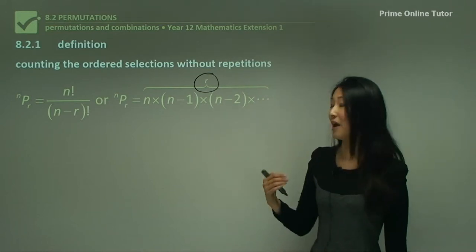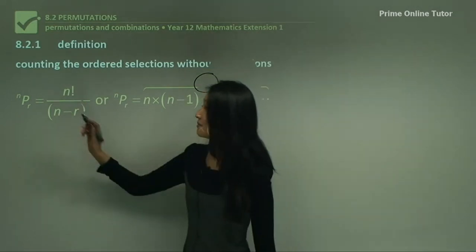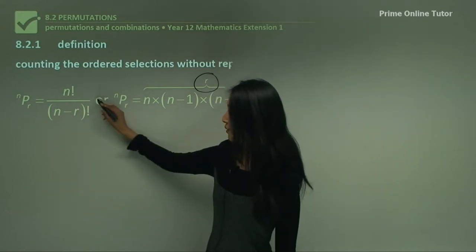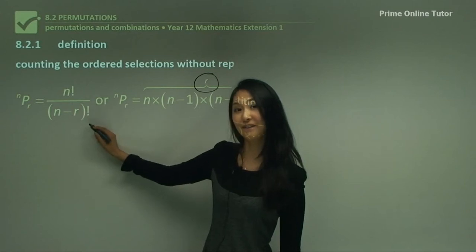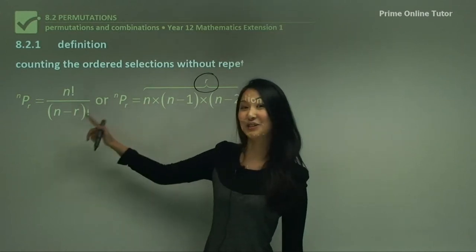The other equation for your permutations ⁿPᵣ is n factorial divided by (n-r) factorial, and we'll see how these two are linked.